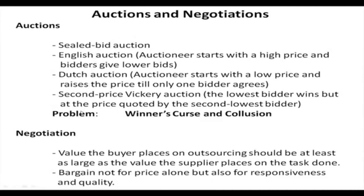Auctions can be of different types. The most common type is the sealed bid auction, where bidders give their bids in sealed condition so that no other bidders know about it. Other auctions are public auctions in different forms so that every bidder knows what the others are bidding. There can be different types: English auction, Dutch auction, and second price Vickery auction — these are the most popular ones.